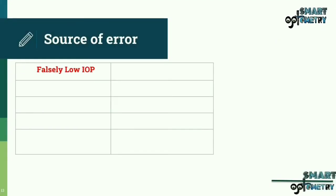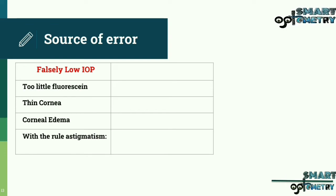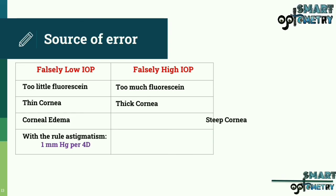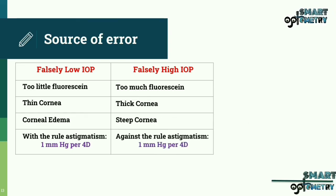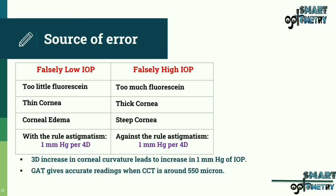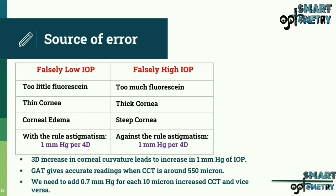Sources of error: falsely low IOP results when there is too little fluorescein, thin cornea, corneal edema, or 4 diopters of with-the-rule astigmatism, which decreases IOP by 1 mmHg. Falsely high IOP results when there is too much fluorescein, thick cornea, steep cornea, or 4 diopters of against-the-rule astigmatism, which increases IOP by 1 mmHg. Note that 3 diopters of increase in corneal curvature leads to an increase of 1 mmHg IOP. GAT gives accurate readings when central corneal thickness is around 550 microns. Add 0.7 mmHg for each 10 microns of increased central corneal thickness, and subtract accordingly for thinner corneas.